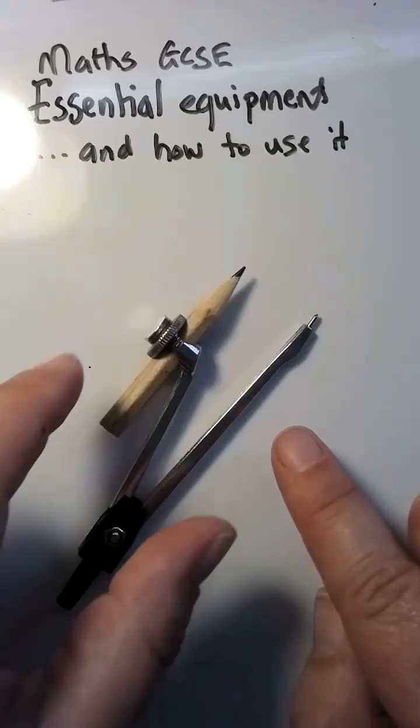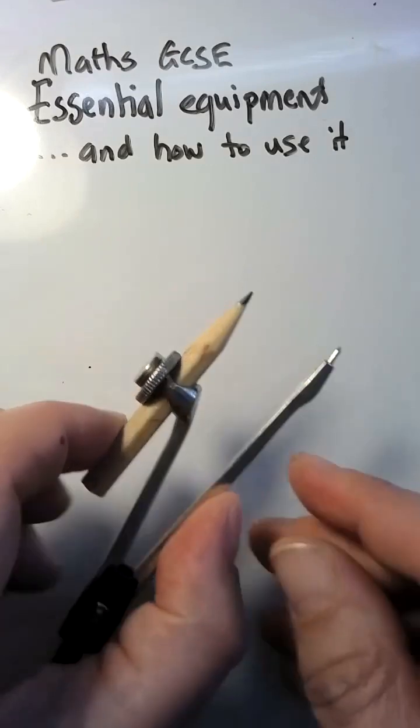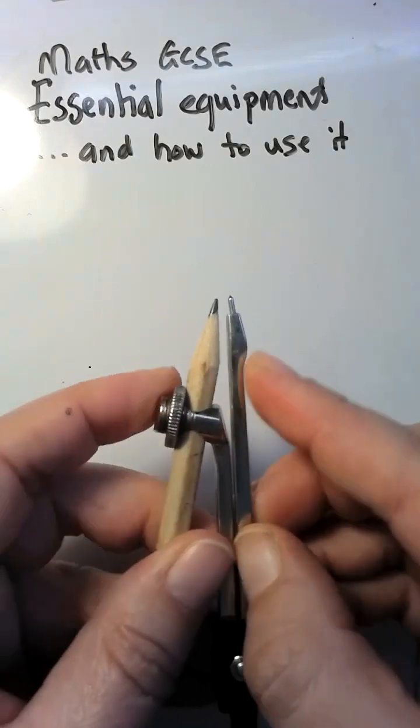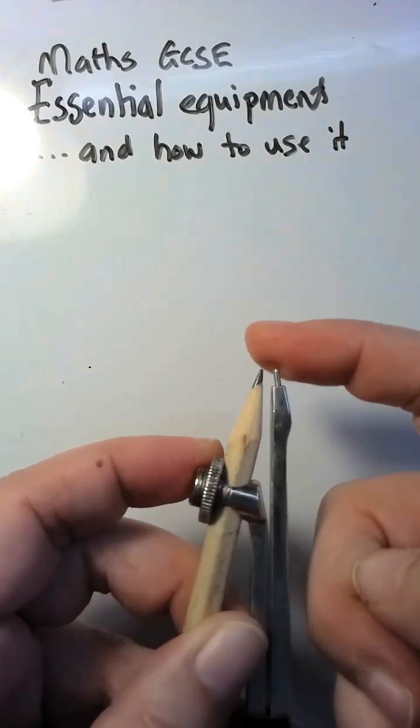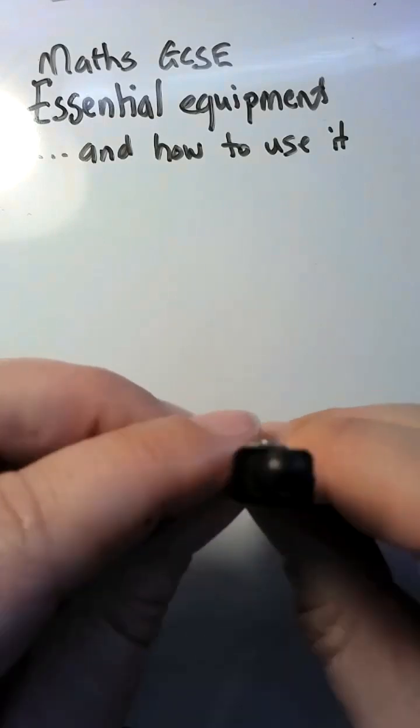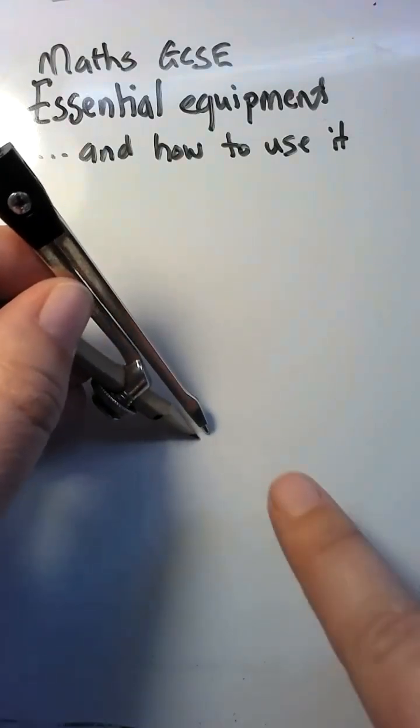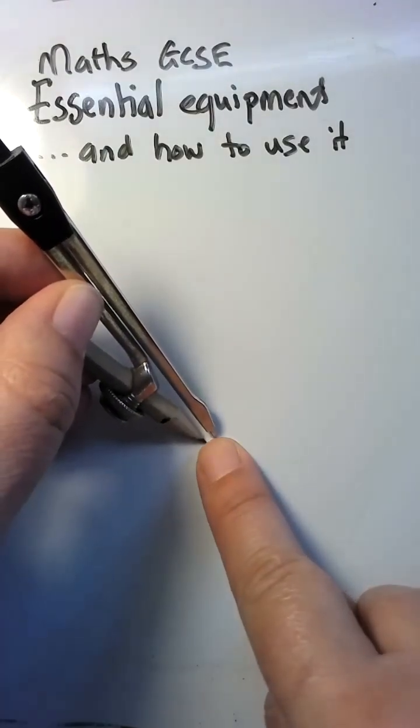This is a pair of compasses. This is how you want to set it up. You want to have the pencil and the point exactly at the same level, so when you put it on your paper, they are exactly at the same place.